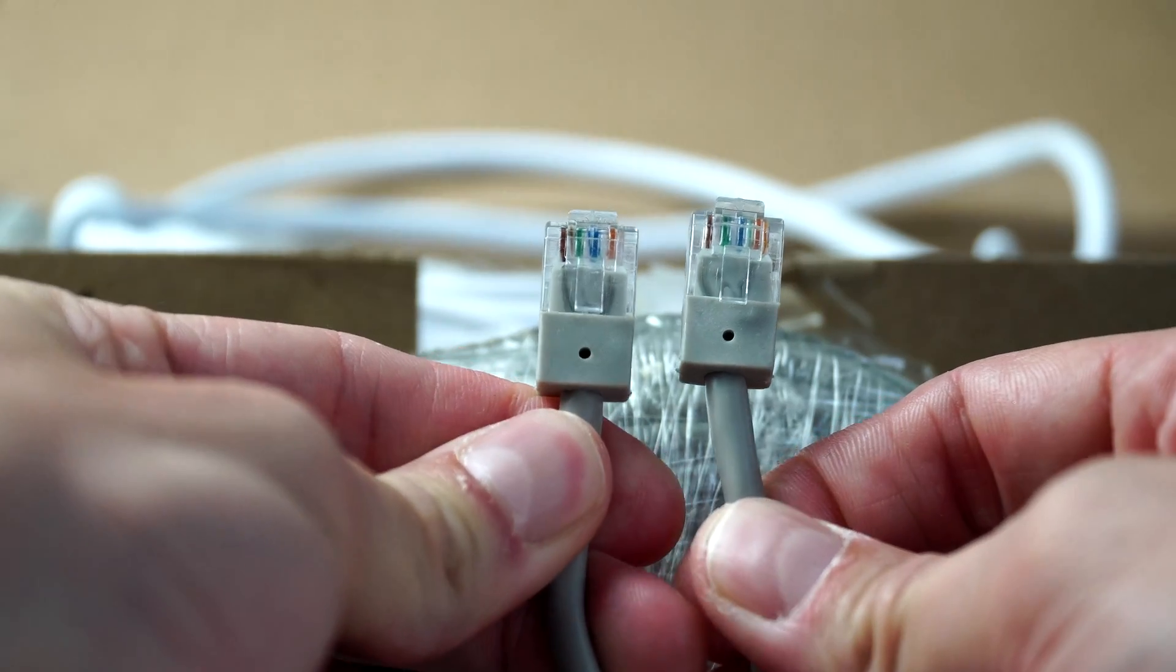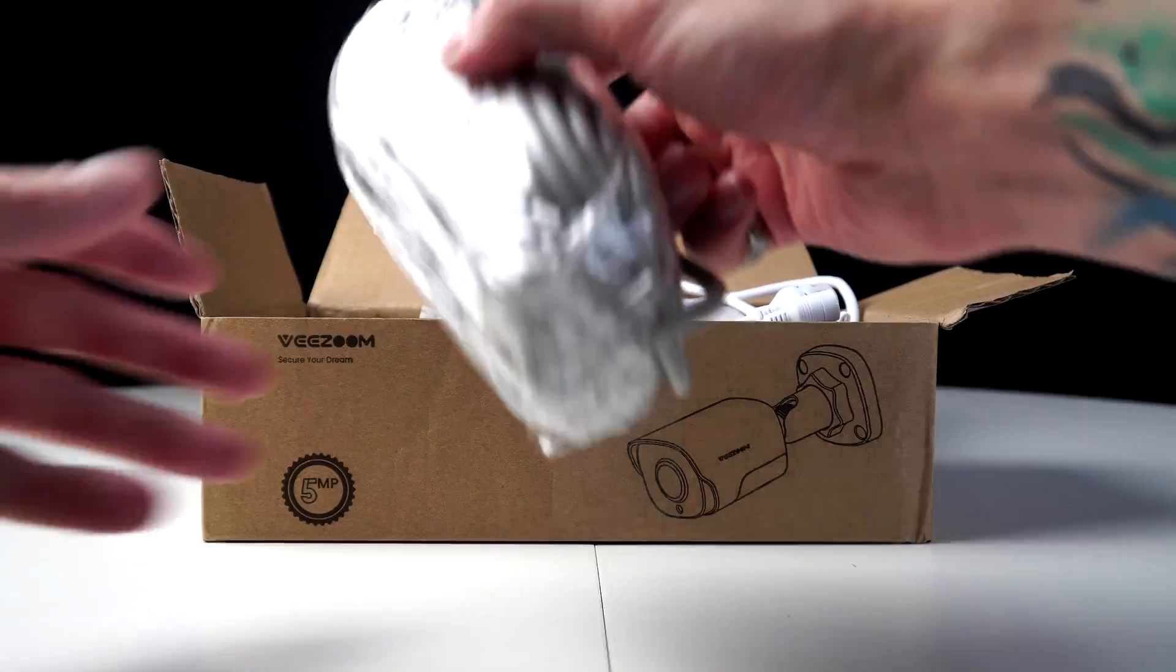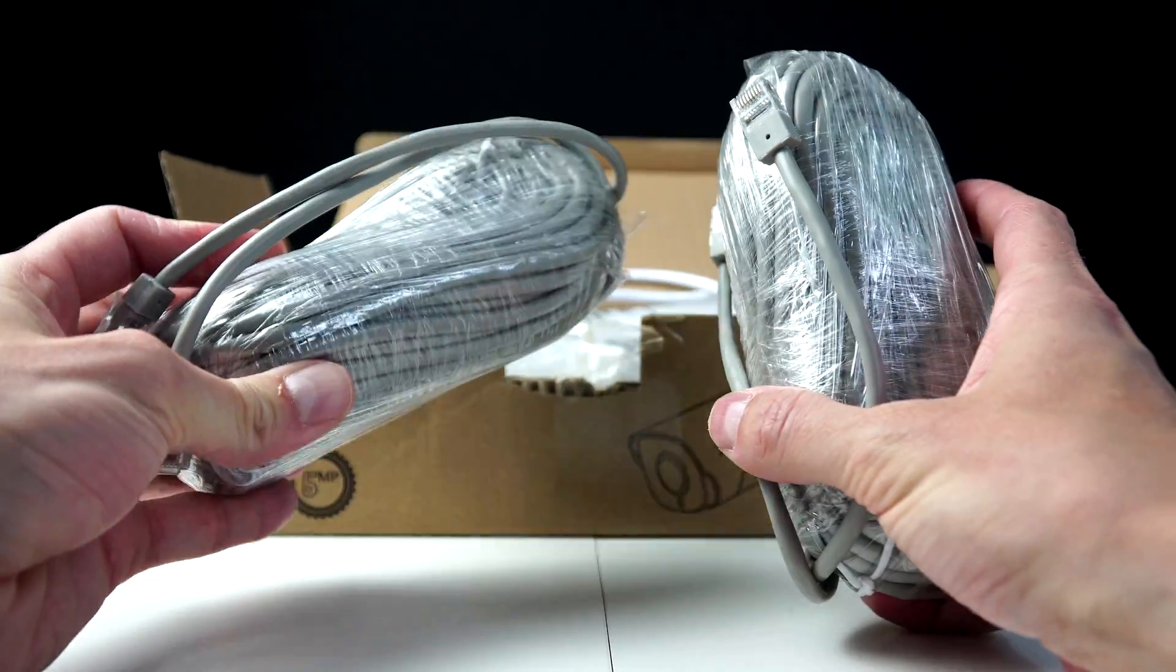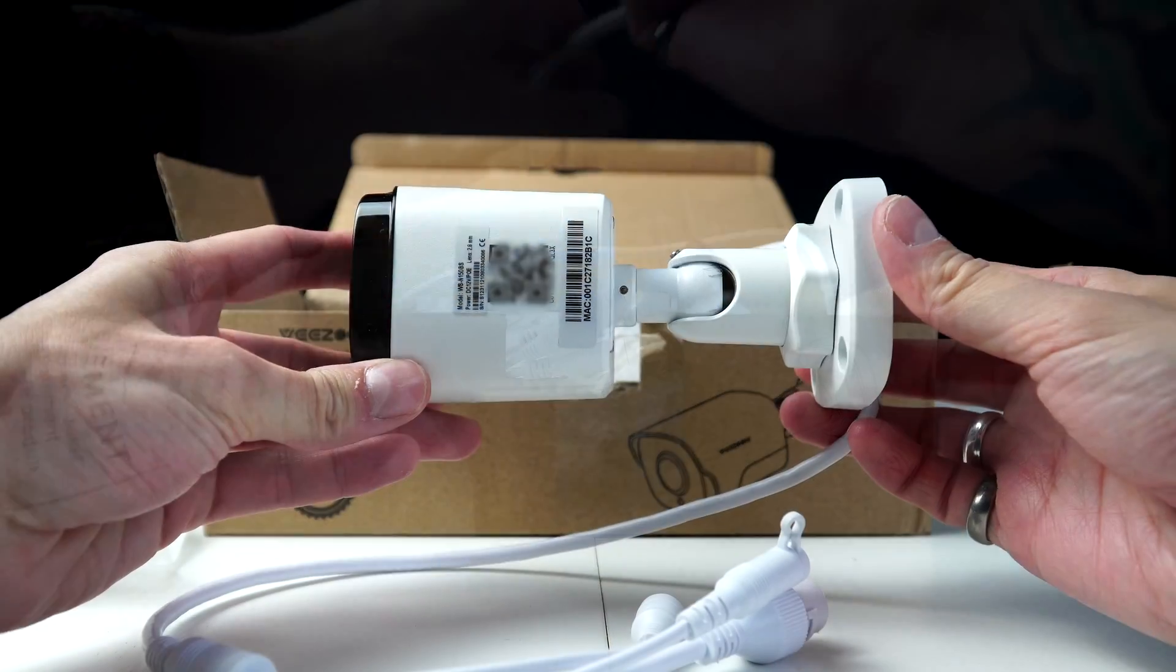Here we've got Cat5 Ethernet cable. These come all wrapped up, which are 18 meters long. Inside that wire is four twisted pair, so eight copper core, which can be used to travel data or data and power down this cable.